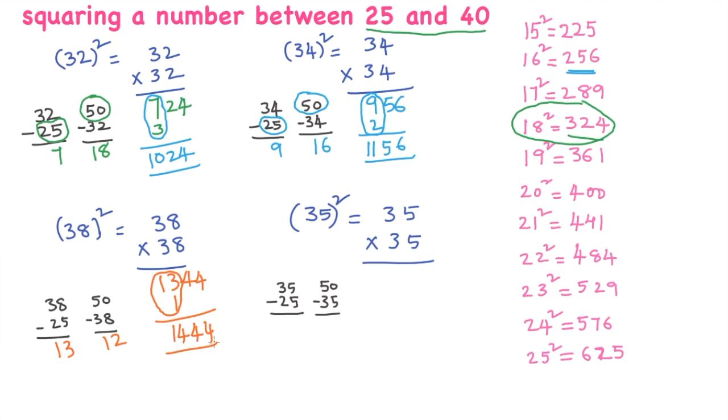35 square: 35 minus 25 is 10, you write 10 here. 50 minus 35 is 15. 15 square is 225. 10 plus 2 is 12, 25. So 35 square is 1225. And we have one more shortcut when a number ends with 5.